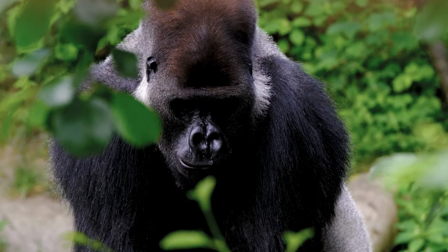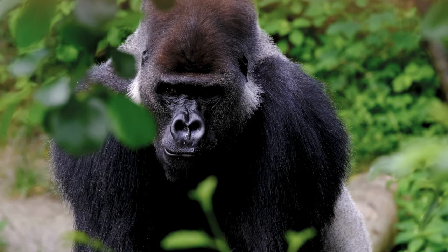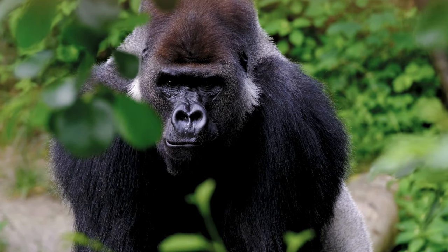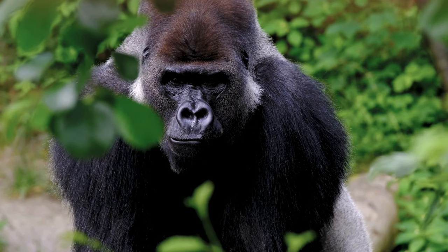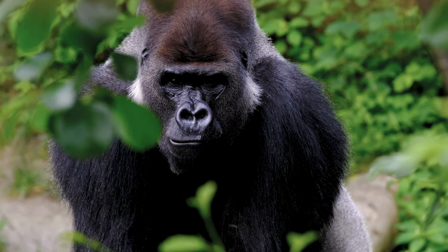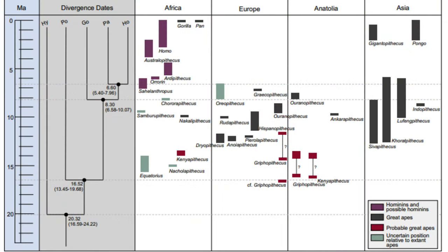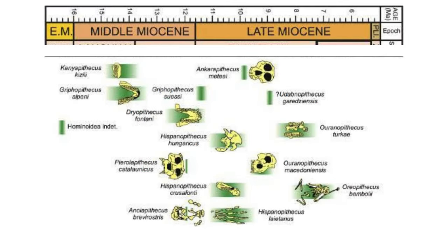Simons and Pilbeam assumed that the past looked like the present — that, just like today, ape species were few and monkeys were abundant. This assumption led them to incorrectly match fossil apes one to one with modern species. However, it is now understood that during the early Miocene, apes were much more diverse and dominant, while monkeys diversified later.